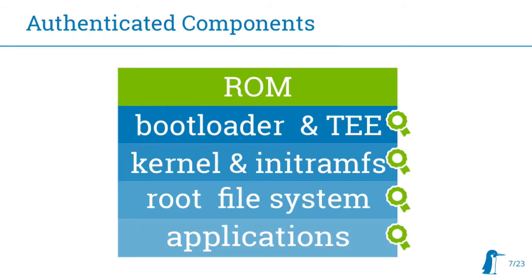The usual components I want to authenticate: the ROM is burned into the SoC so I can be pretty sure it's not modified — it checks my bootloader and possibly trusted execution environment. That checks the kernel and initramfs, which checks the filesystem, and maybe on my filesystem I have a Docker instance that checks my Docker images. So I have the full chain of software components authenticated.